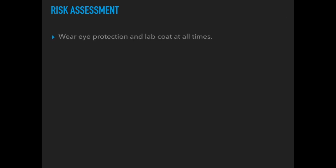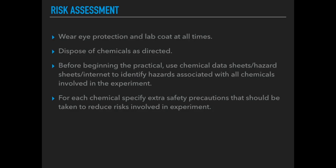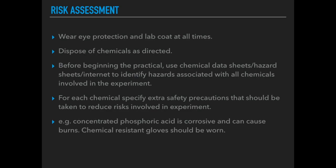Starting with the risk assessment — you shouldn't do an experiment before considering the risks. Obvious things include: wear eye protection and lab coat at all times, and dispose of chemicals as directed. Before beginning the practical, refer to chemical data sheets, hazard sheets, or the internet to identify hazards associated with all chemicals involved, and specify any extra safety precautions for each. For example, concentrated phosphoric acid is corrosive and can cause burns, so an extra precaution would be to wear chemical resistant gloves.